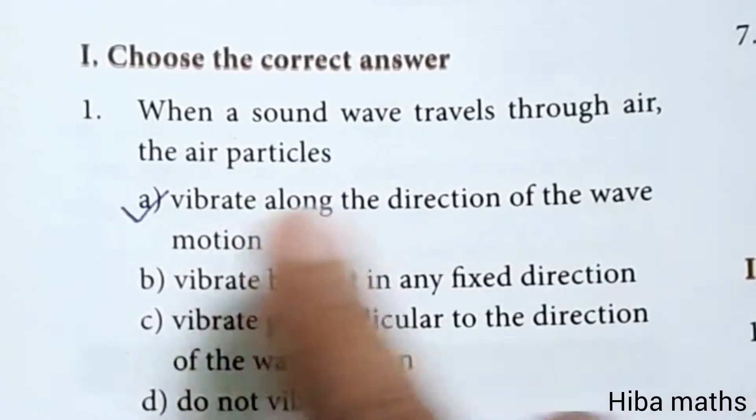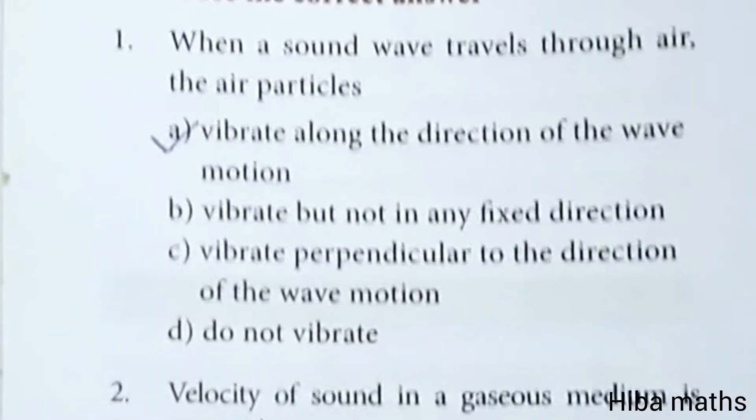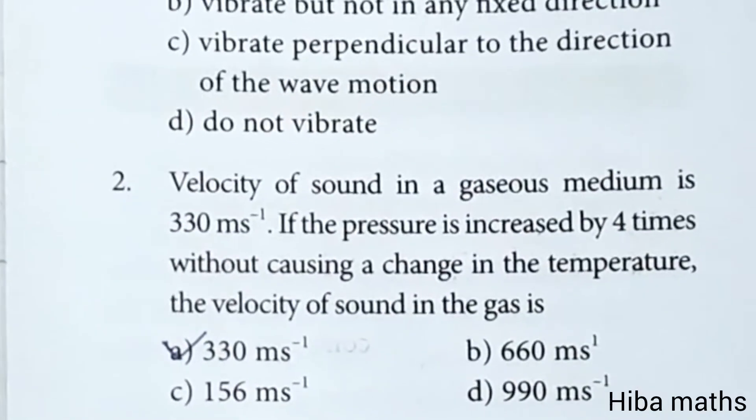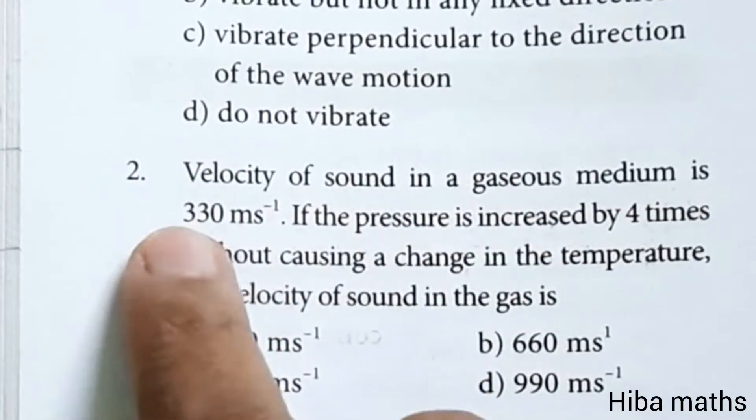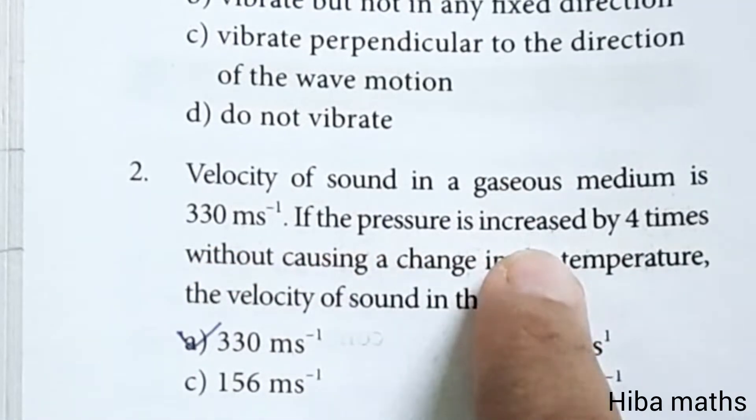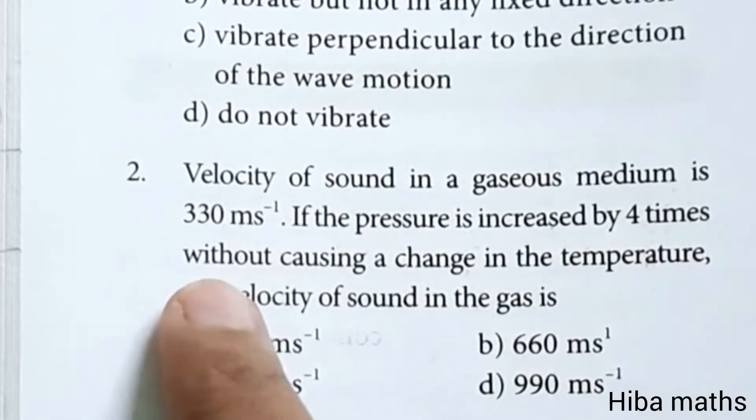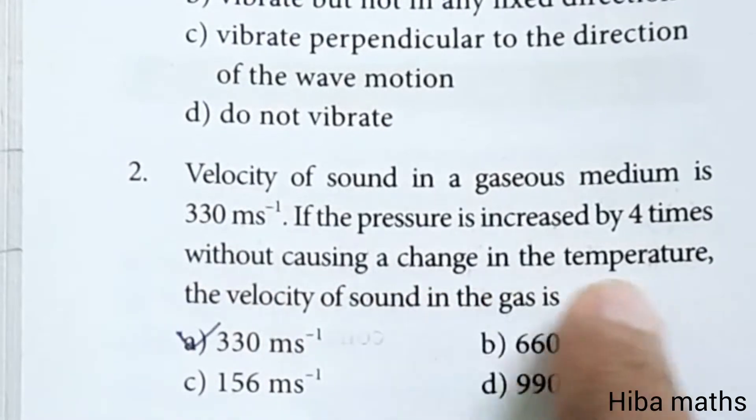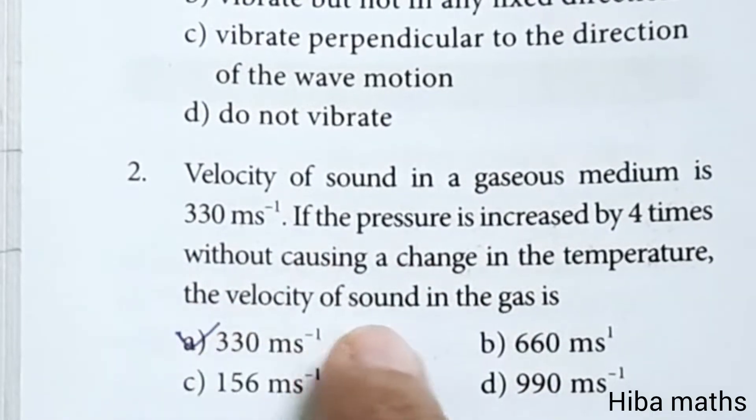Second one: velocity of sound in a gaseous medium is 330 meter per second. If the pressure is increased by 4 times without causing a change in the temperature, the velocity of sound in the gas is the same, 330 meter per second.